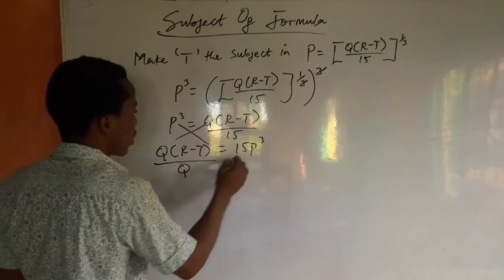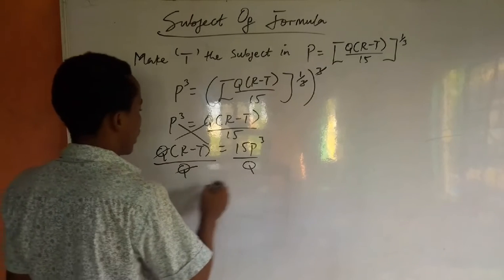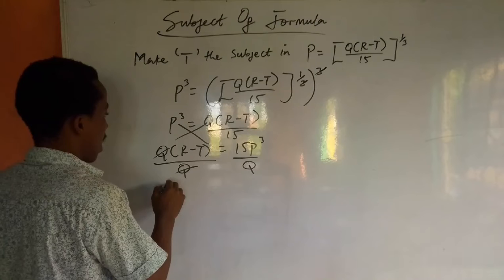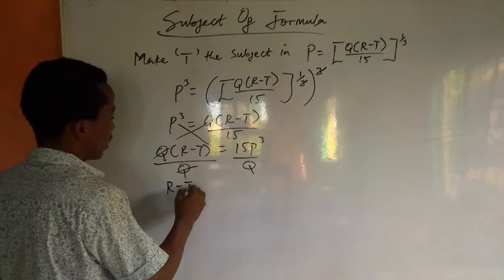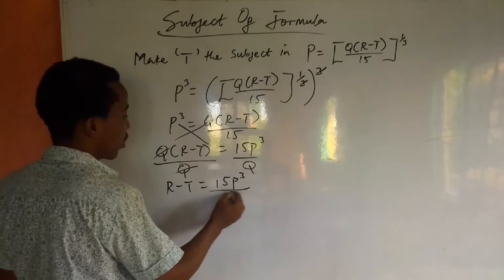Let's divide both sides by Q, so we then have R - t = 15P³/Q.